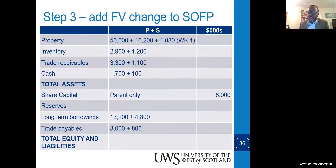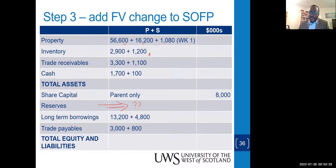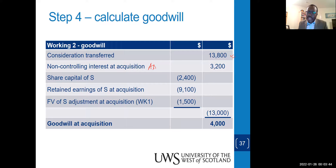Since the inventory was fully sold, there is no adjustment needed there. Trade receivables and cash are unchanged. Share capital is the parent's only. Reserves are still hanging — we need to do more work there. Long-term borrowings and payables are added up. Now for the goodwill: how much was paid as consideration? It is 13,800. We add the non-controlling interest at acquisition, which was given in the question as 3,200.